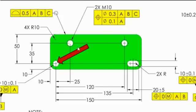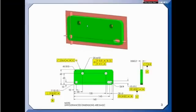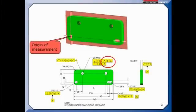So because A, B, and C have been referenced in all these feature control frames, your origin of measurement is where these three mutually perpendicular datum planes intersect. And as far as the relationship...